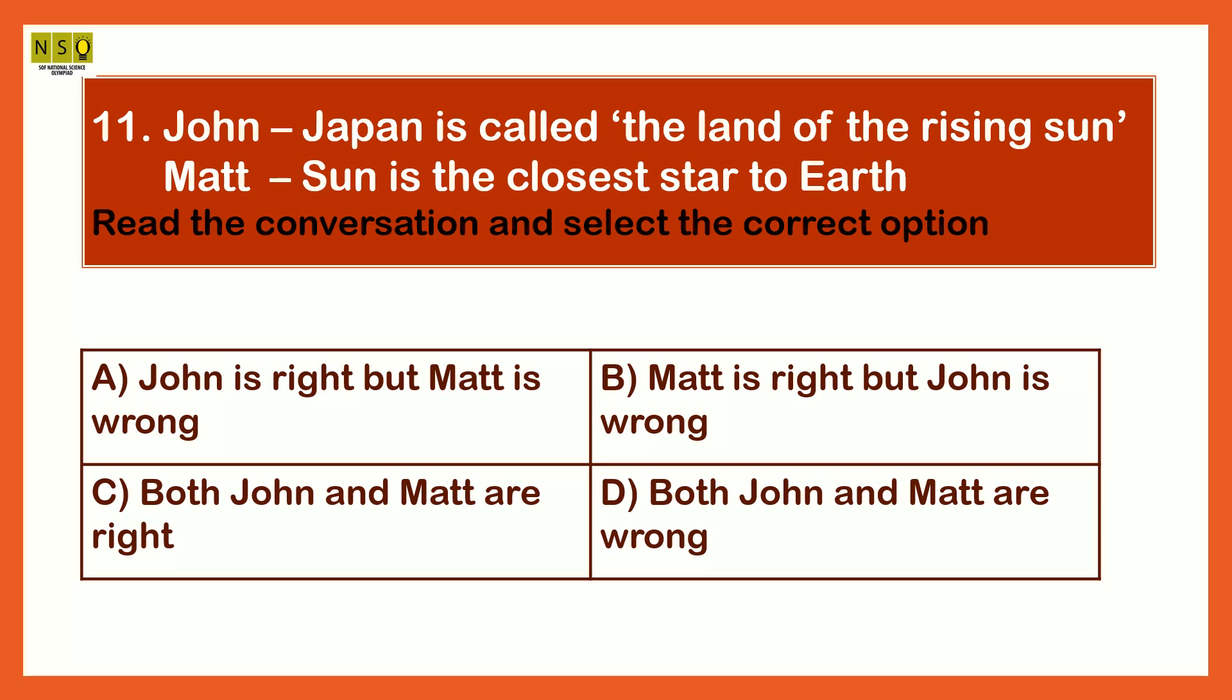Option D, Both John and Matt are wrong. The correct answer is both John and Matt are right. Yes, Japan is called the land of the rising sun and sun is the closest star to Earth.